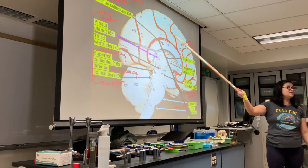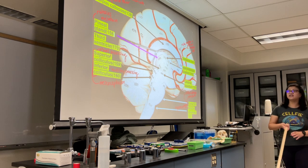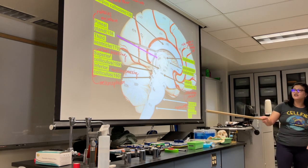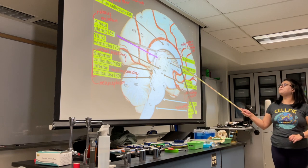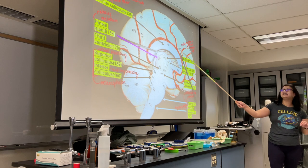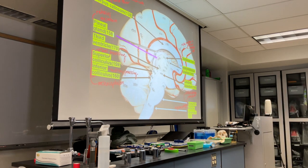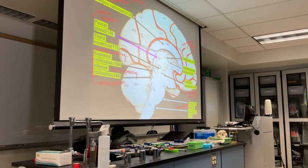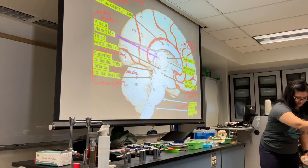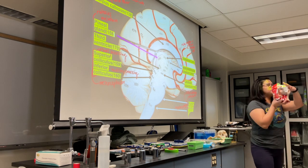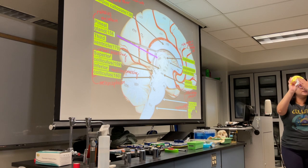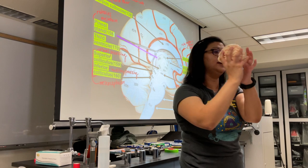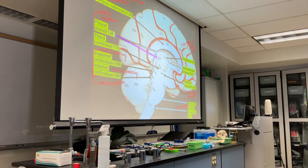Starting with a structure called the corpus callosum. You can actually take these brain models apart. Number 138 is your corpus callosum — it is not a membrane. Notice how it's vastly different from the membranes covering your cerebrum. The corpus callosum allows the left and right sides of your cerebrum to communicate with one another.